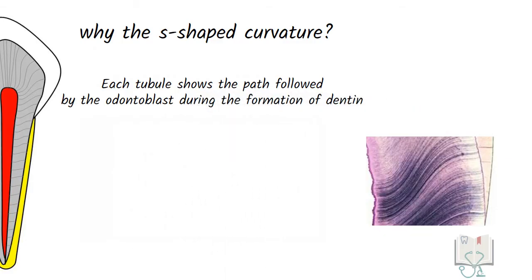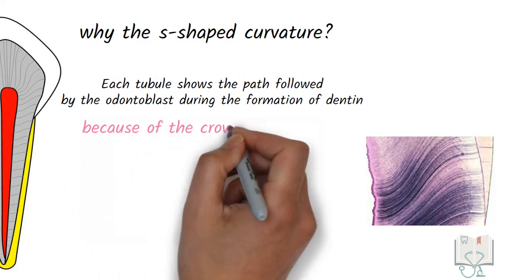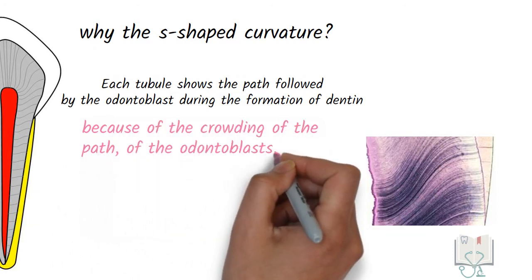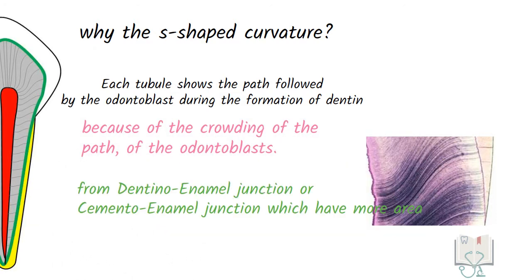So the S shaped curvature is because of the crowding of this path as the odontoblasts move from the outside which has more area to the pulp which has lesser area.